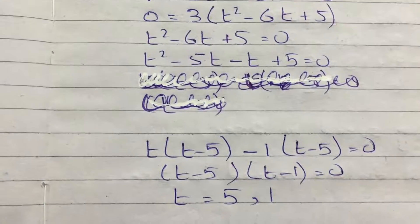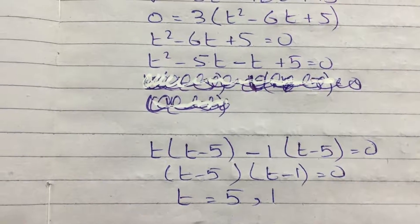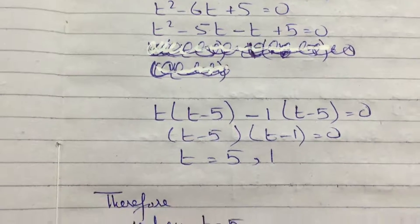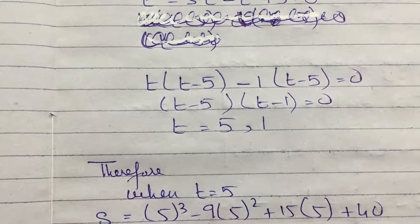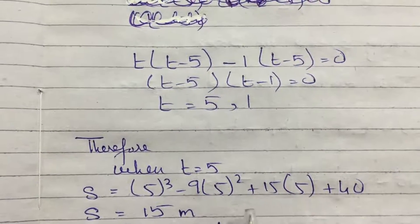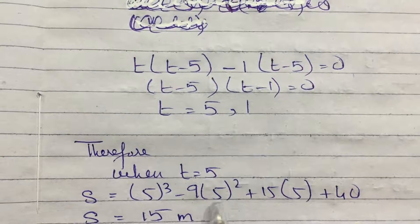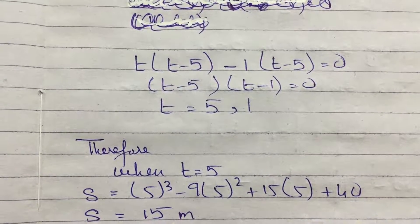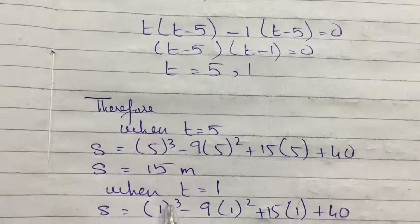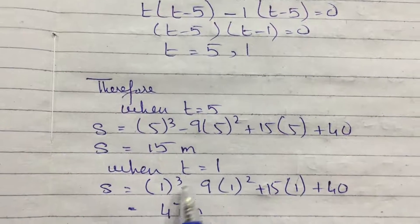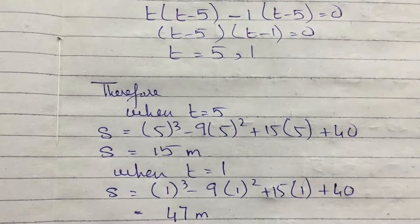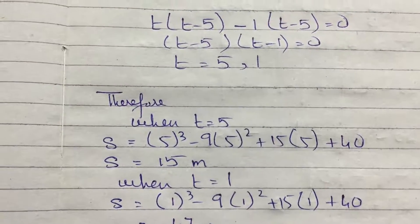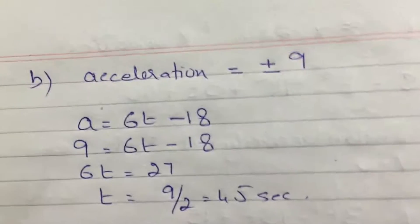It means the object was instantaneously at rest at t equals one second and t equals five seconds. To find the distance from the origin, I substitute t equals 5 into the displacement equation, giving 15 meters, and then t equals 1, giving s equals 47 meters. So I got the two distances when the object was instantaneously at rest.